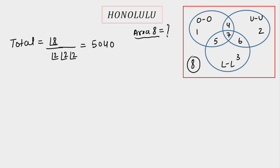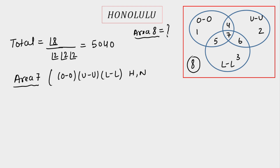The easiest area to calculate is area 7, where OO, UU, and LL are all together, with H, N, and R as individual letters. I count OO as a single unit, UU as a single unit, and LL as a single unit. So we have a total of 5 units, and nothing repeats, giving 5! = 120 words in area 7.